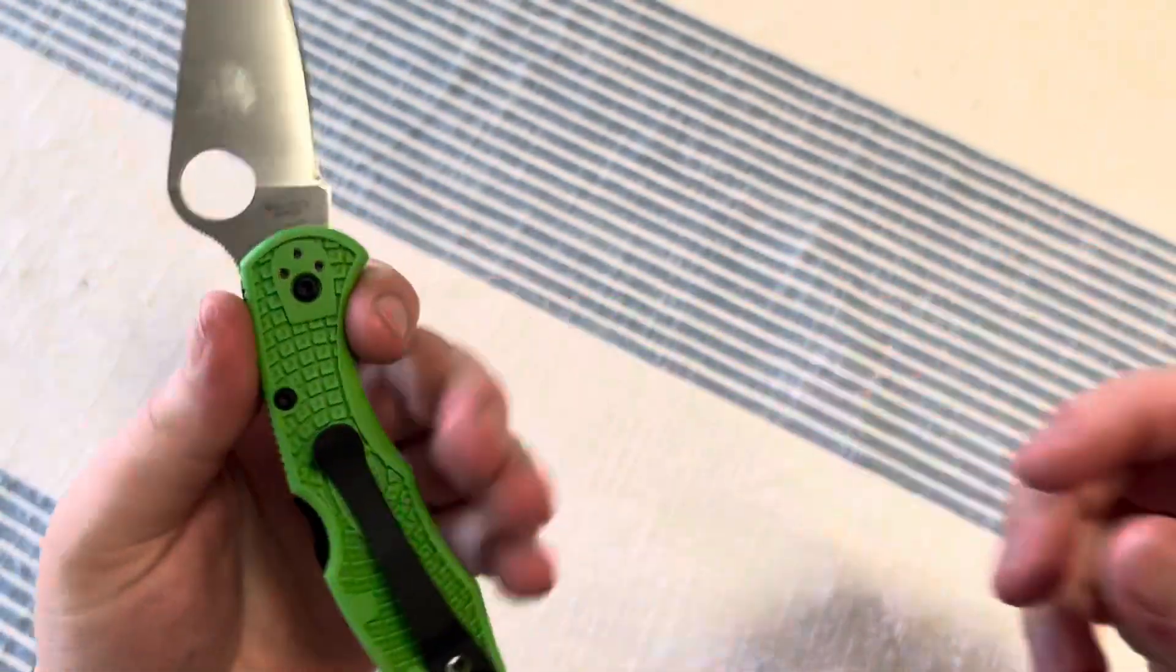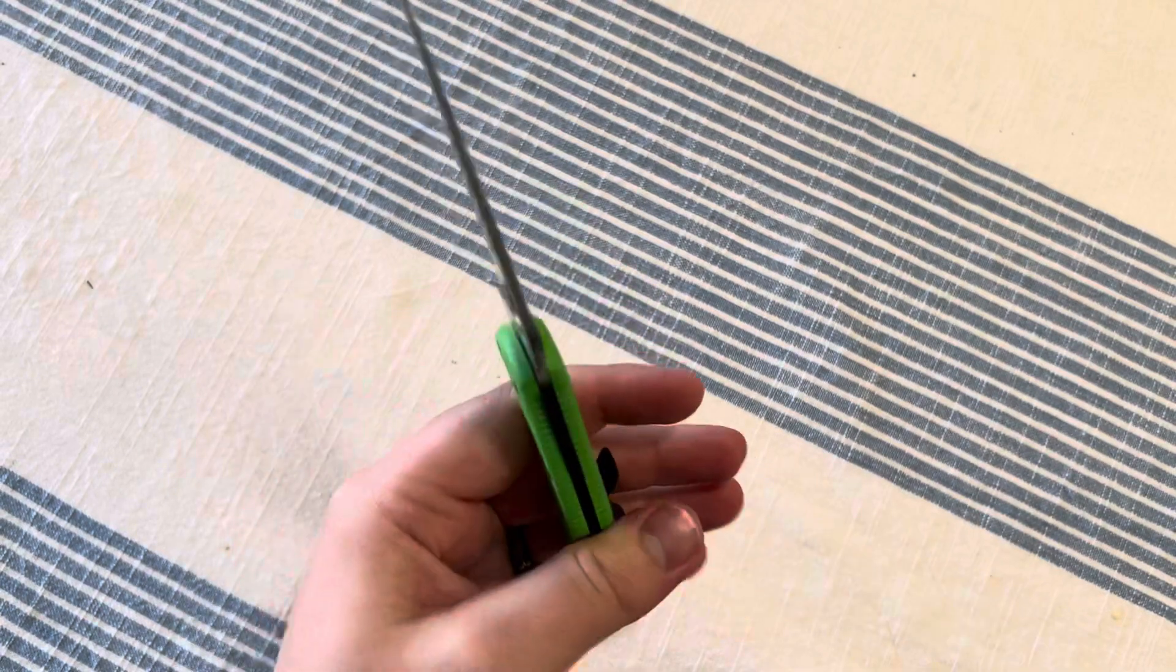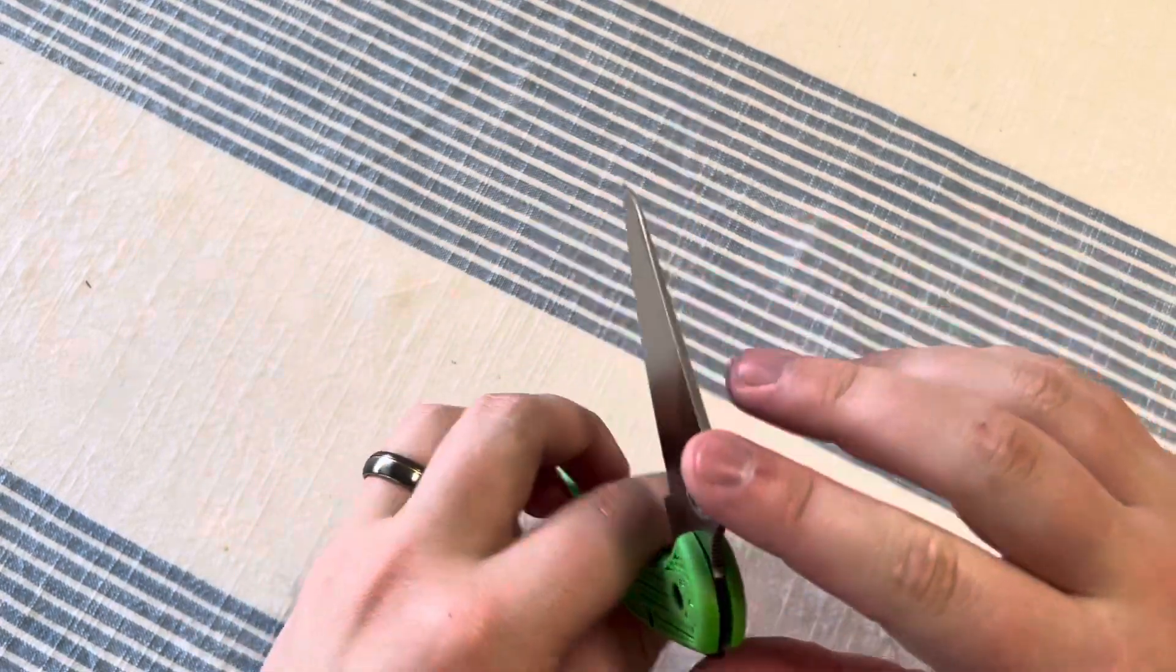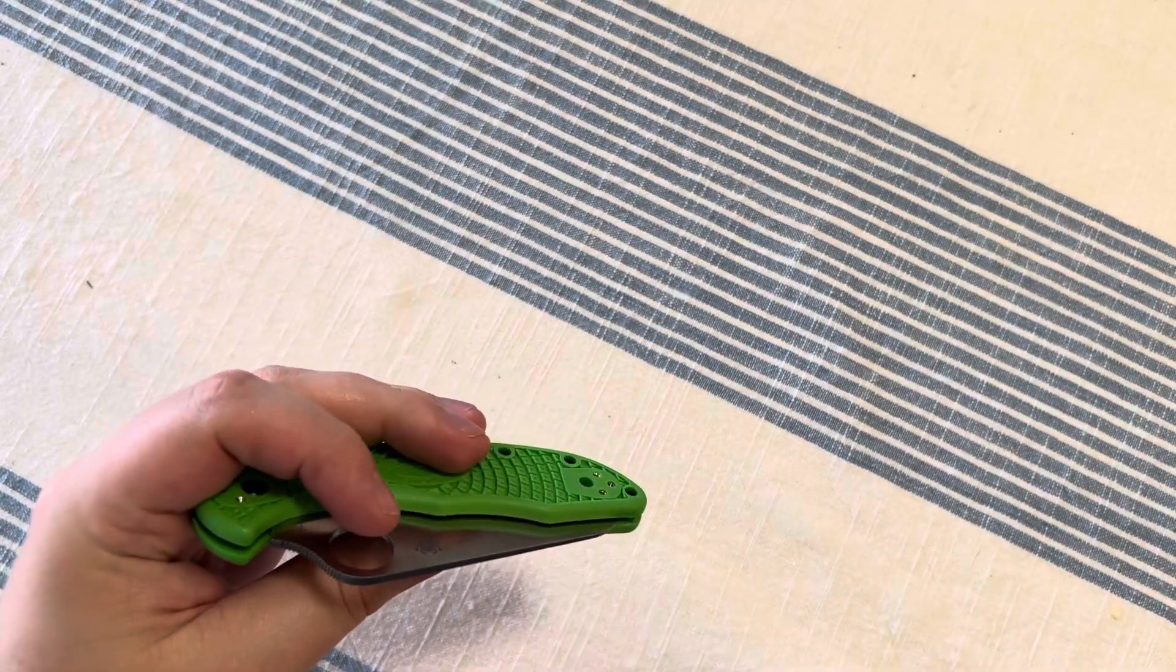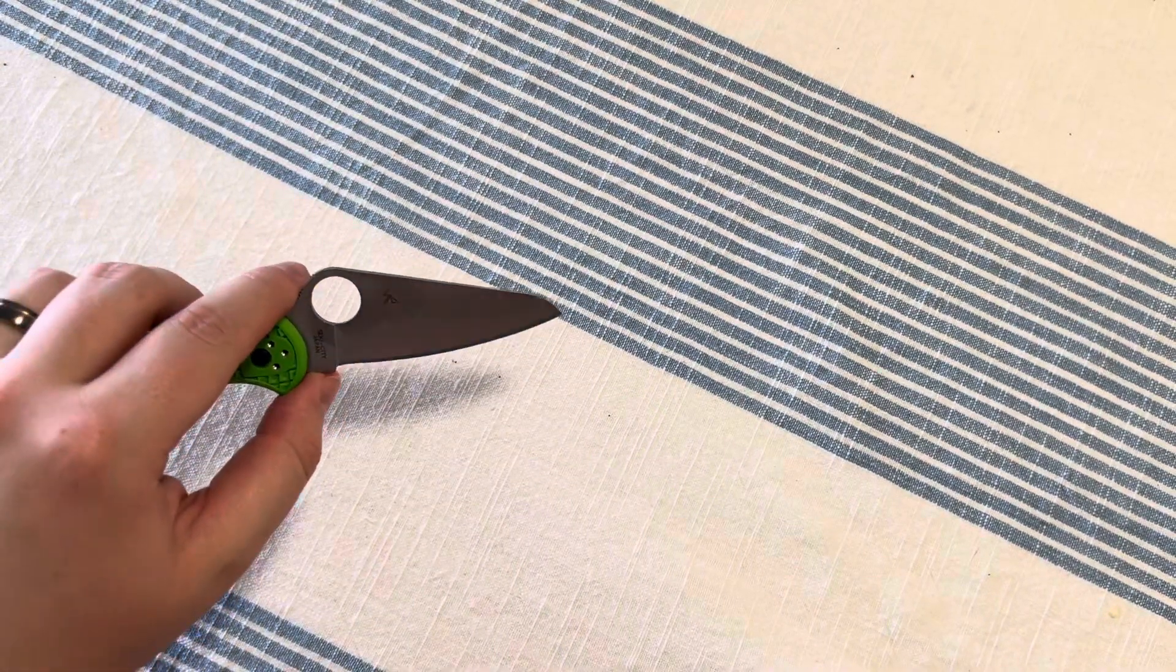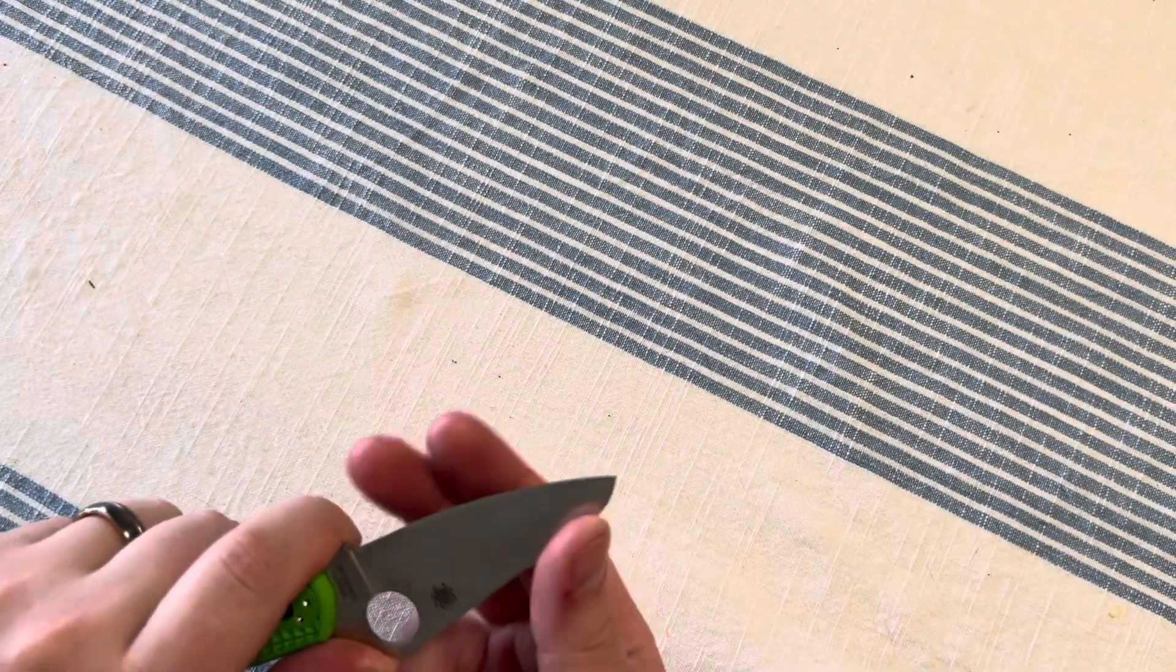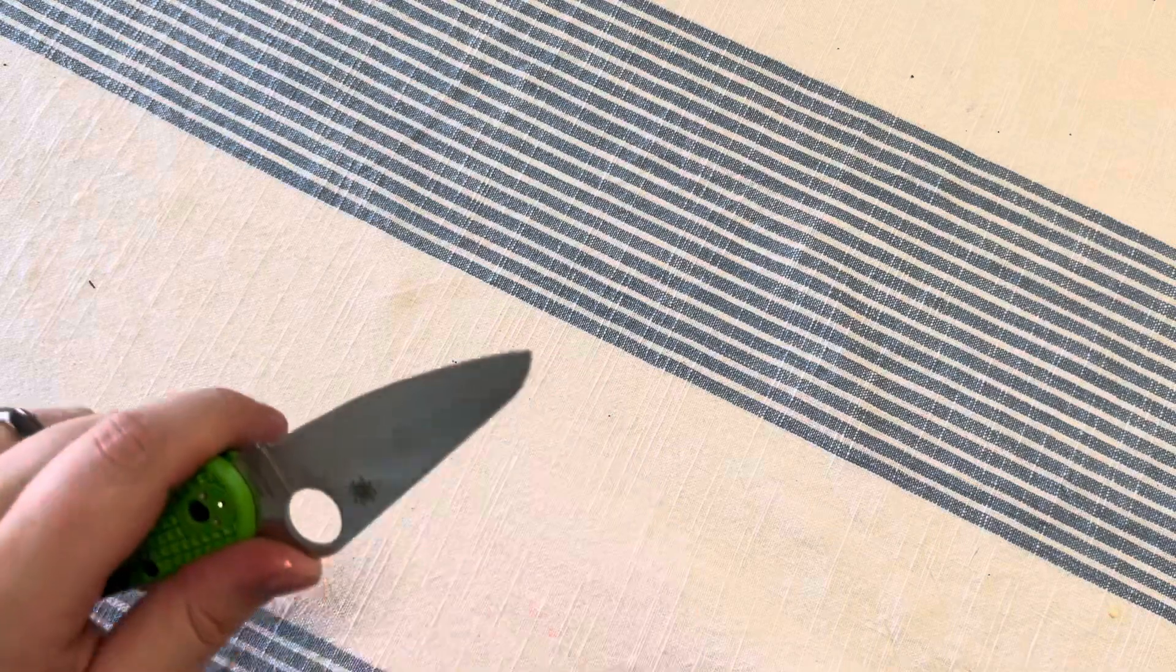The handle kind of makes me want a Delica, to be honest. But I'd want one in anything besides VG10. I mean, VG10 is a good user steel, but I'd want something a little more exciting. It's got a good edge on there from the factory.